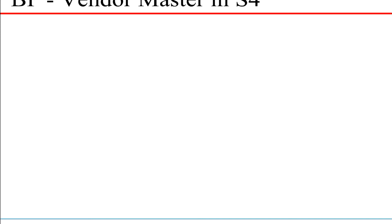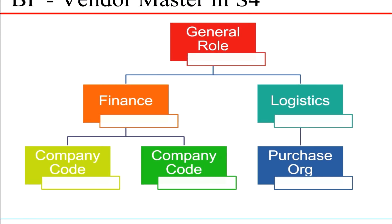Let's look at how specific roles are used here. For any business partner, whether it is a vendor or customer, we need to create general data and then extend that general data for that particular business partner to post in finance, which is company code information, and then if it is related to logistics, the purchase organization. Let us focus only on the vendor master side of the BP.